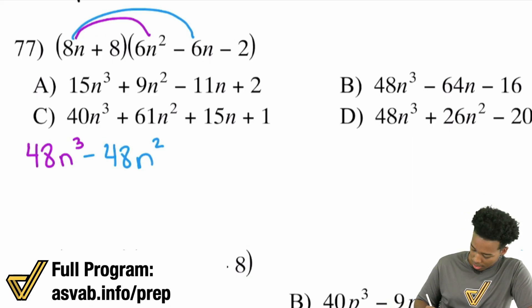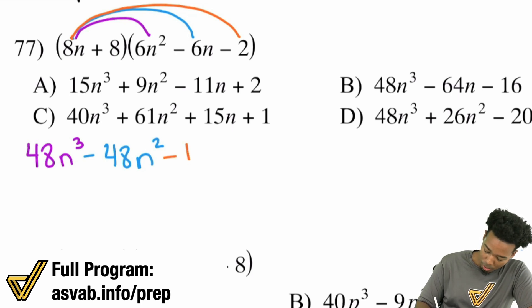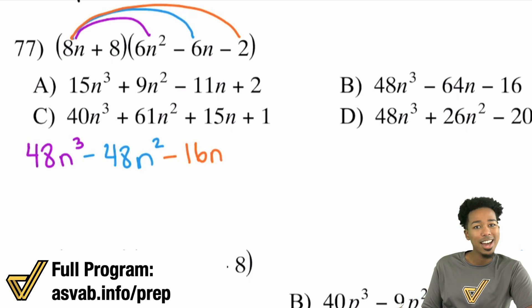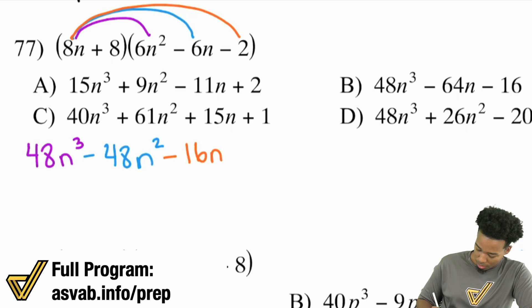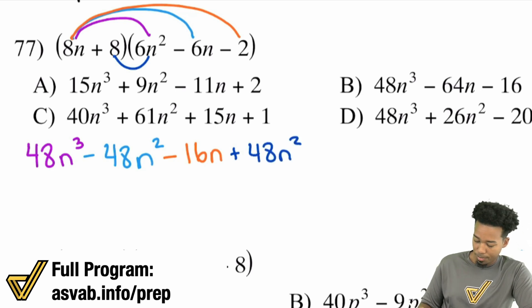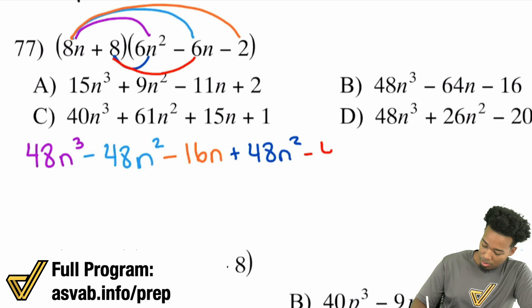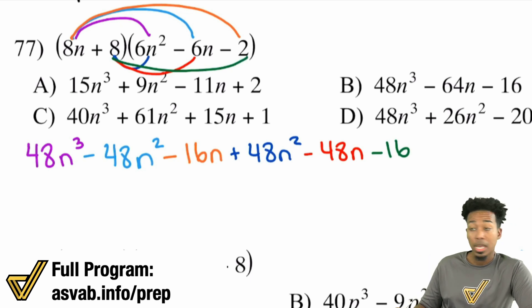8n still needs to multiply with that negative 2: positive times a negative is negative, 8 times 2 is 16, and we keep the n — so negative 16n. That's all three terms done for 8n. Now for the second term: 8 times 6n² is positive 48n², 8 times negative 6n is negative 48n, and 8 times negative 2 is negative 16. Now we combine like terms.